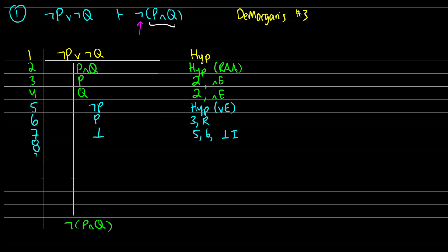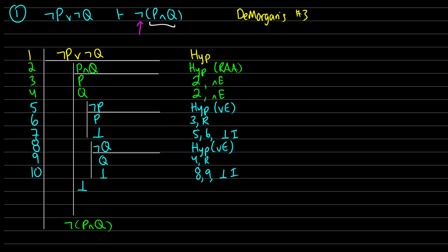In lines 8, 9, and 10, we're going to do something very similar, but this time we'll work with ¬Q. So we're going to assume ¬Q for OR elimination — from line 1 we have ¬P∨¬Q, so we're seeing what happens if we assume either one. I'm going to reiterate Q from line 4 by reiteration, and that gives us a contradiction since we have ¬Q and Q. From lines 8 and 9 this is contradiction introduction. Because we have ¬P going to a contradiction and ¬Q going to a contradiction, we can get a contradiction out using OR elimination from line 1, with subproofs from 5 to 7 and 8 to 10.